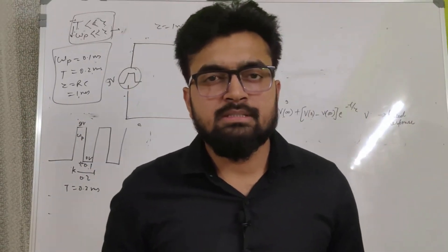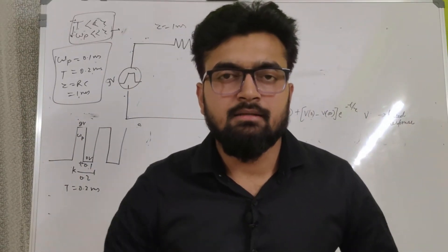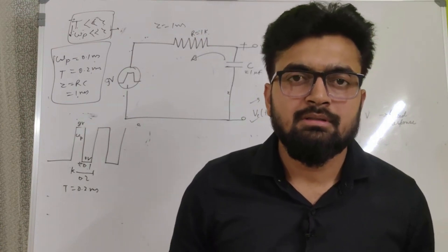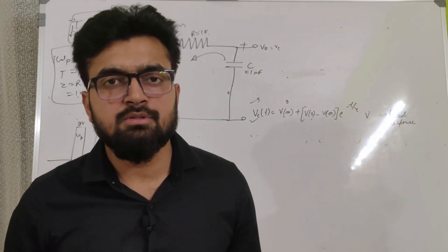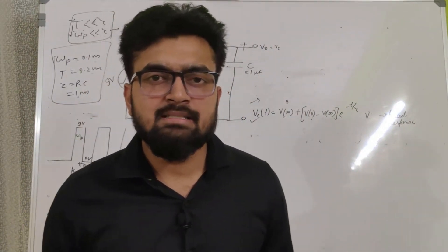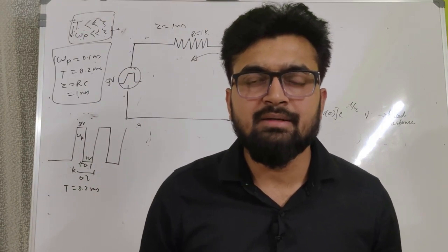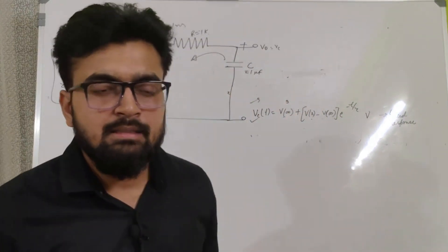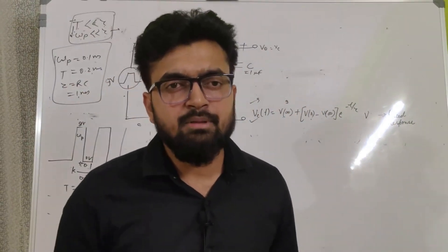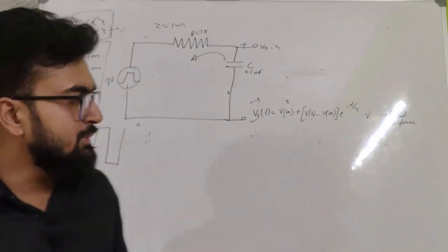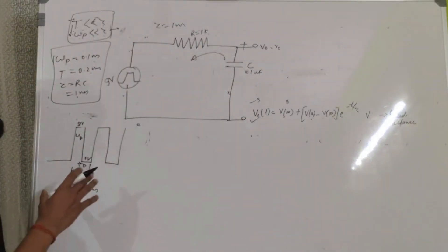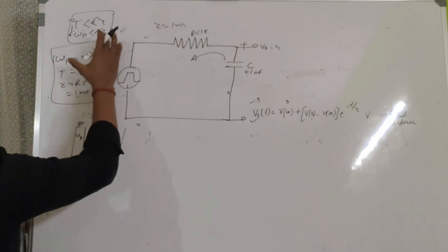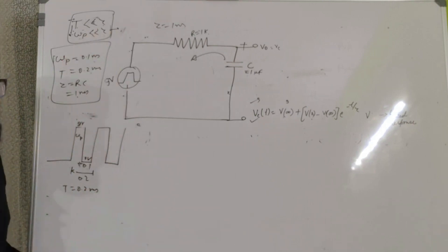Hi everyone, welcome back to our channel. In the last video we studied an RC circuit where the pulse width was much lesser than the time constant but the time period was much more than the time constant. In this video we are going to study a situation where both the pulse width and the time period are much lesser than the time constant.